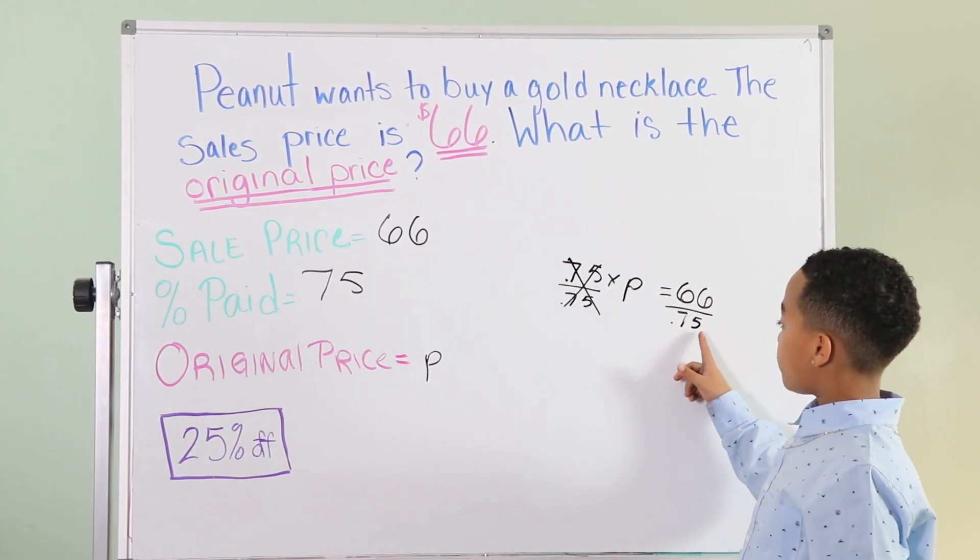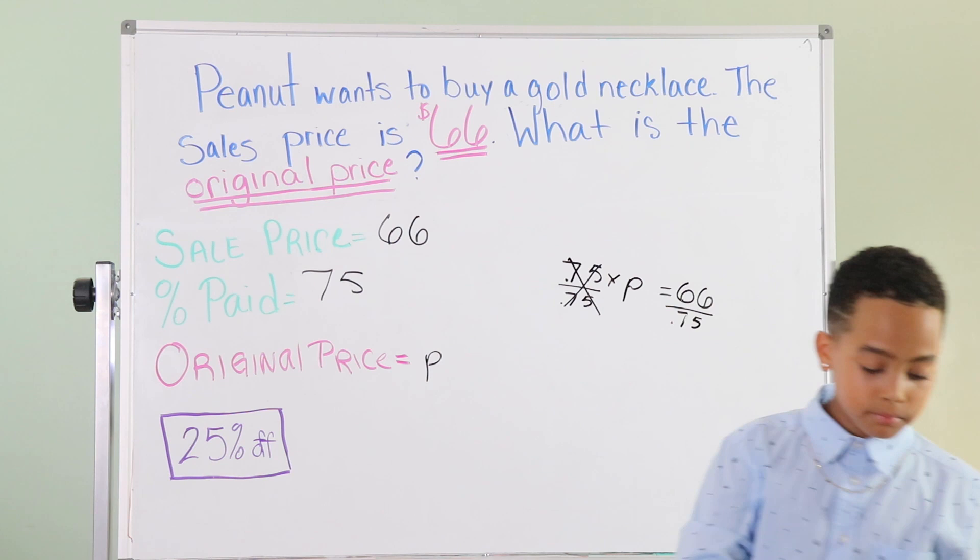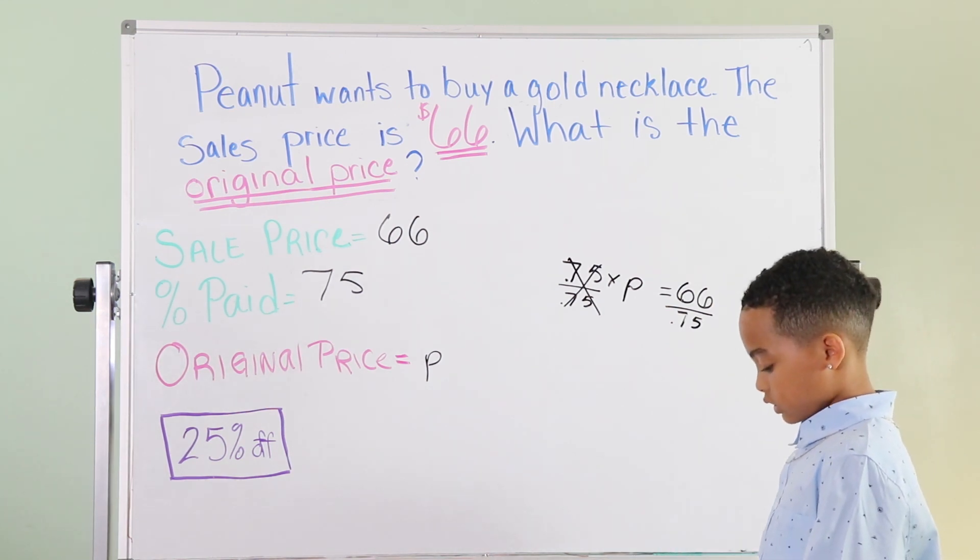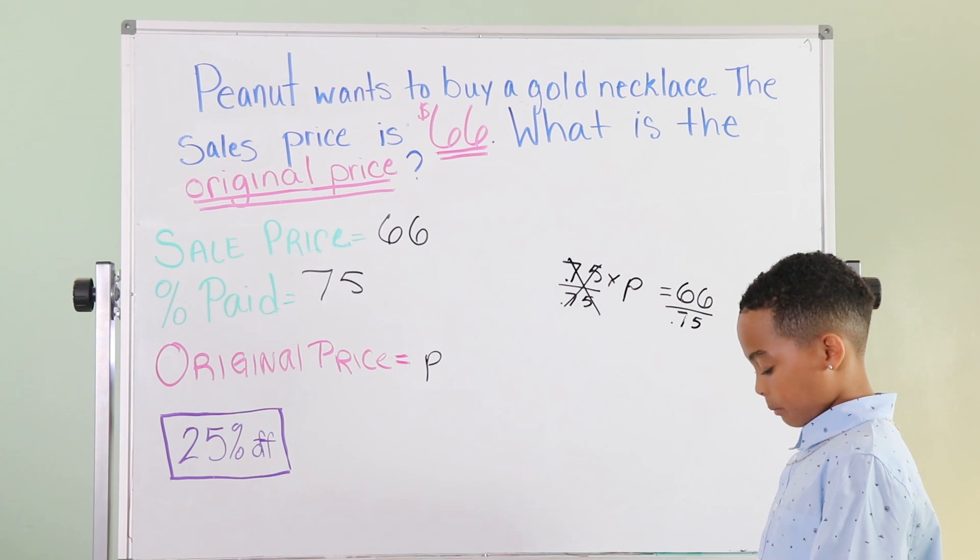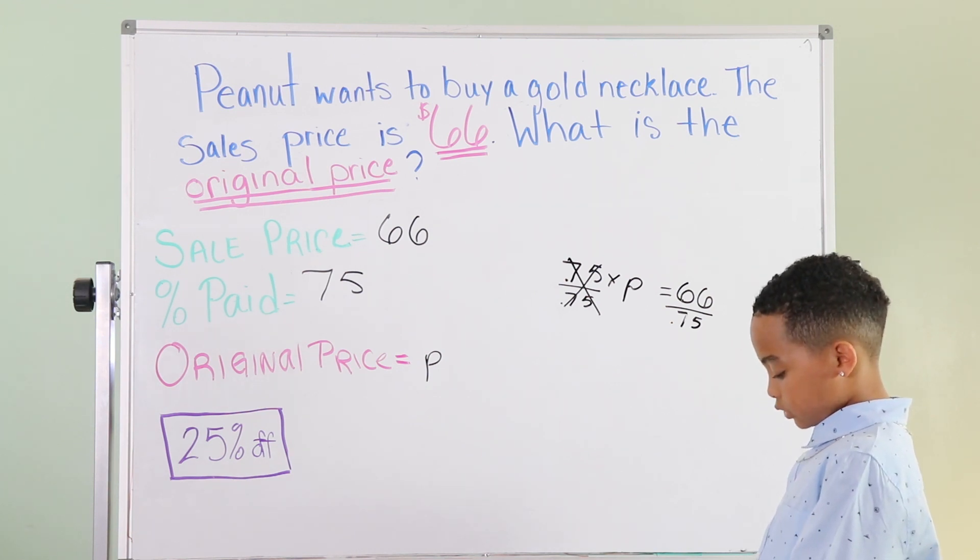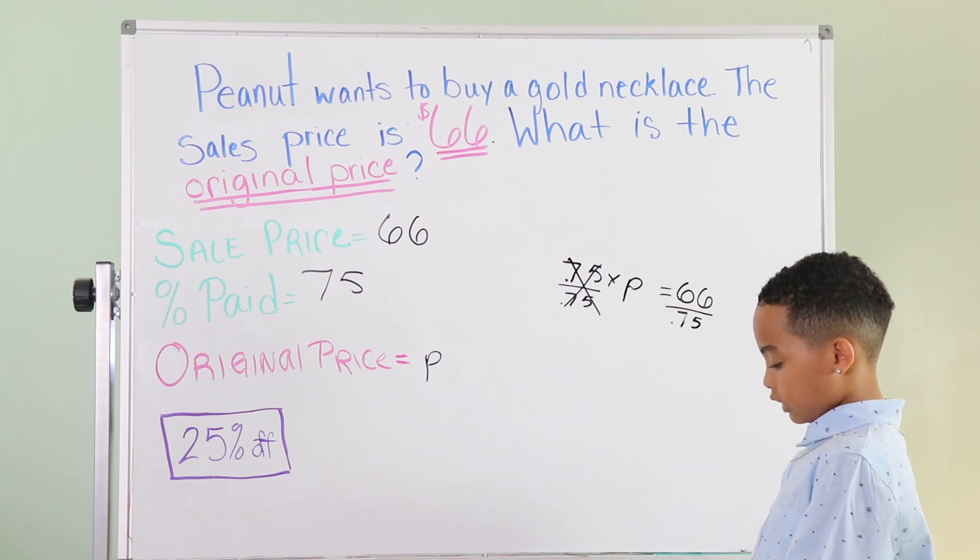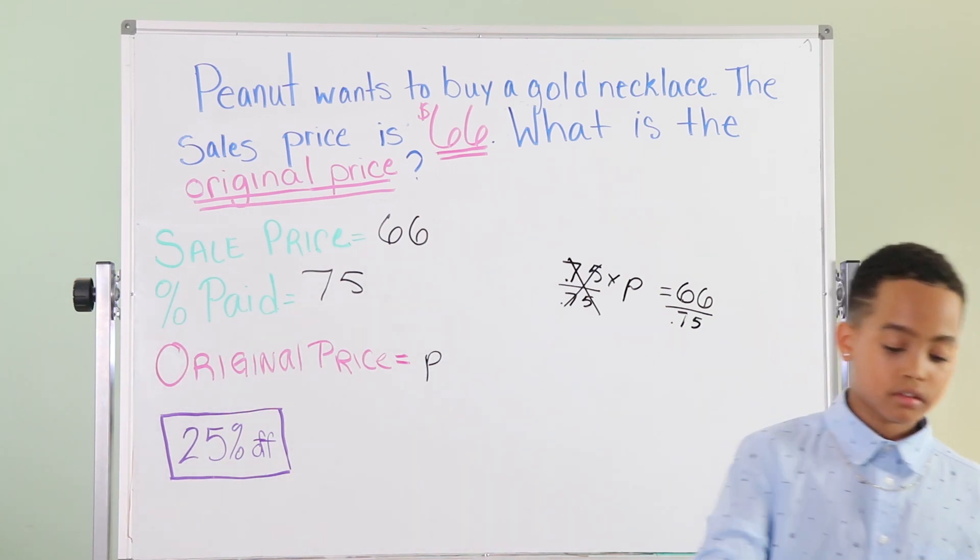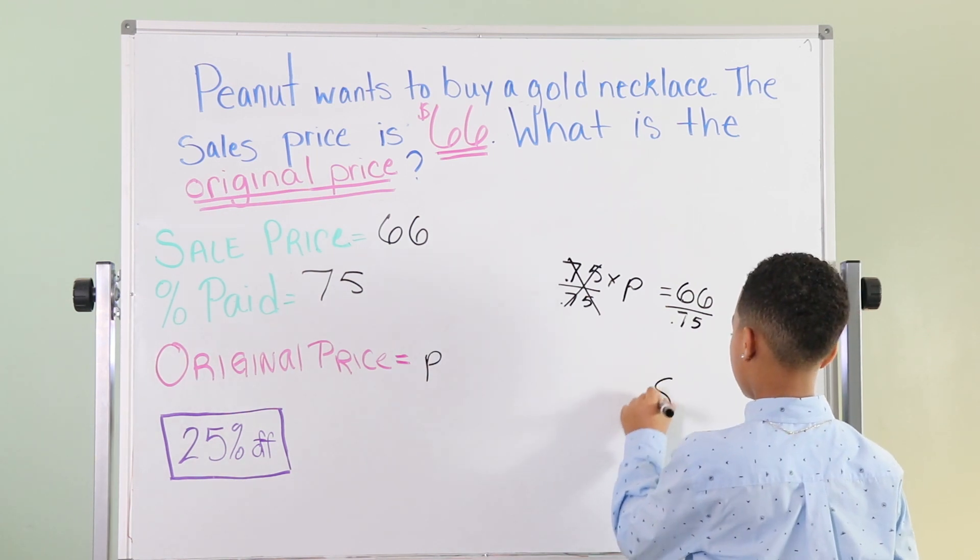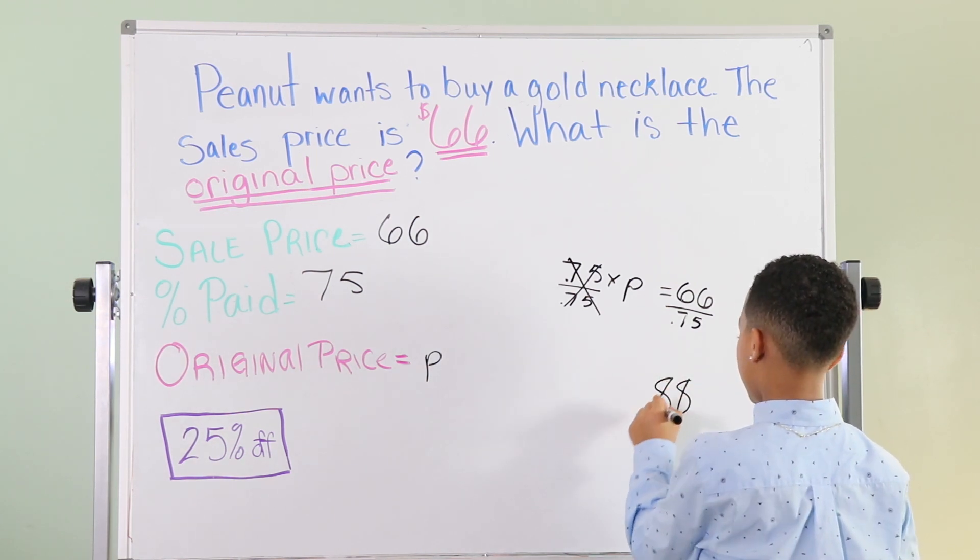Now, you might want to use a calculator for this problem. So, 66 divided by 0.75, make sure you put the point, equals 88. So the answer is the original price is $88.